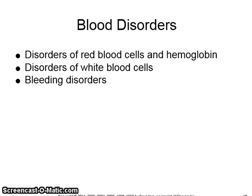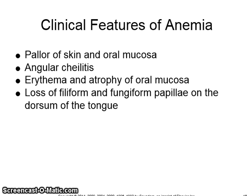Disorders of red blood cells and hemoglobin, disorders of white blood cells, as well as bleeding disorders can have clinical manifestations. Anemia shows pallor of skin and oral mucosa, angular cheilitis, erythema and atrophy of oral mucosa, and loss of filiform and fungiform papillae on the dorsum of the tongue.